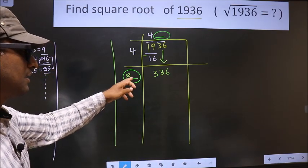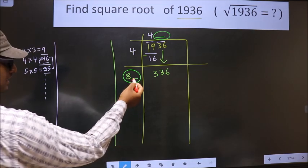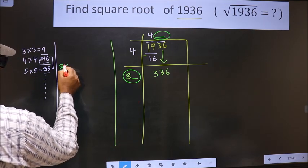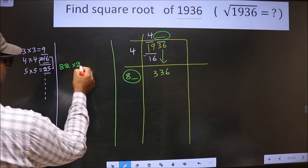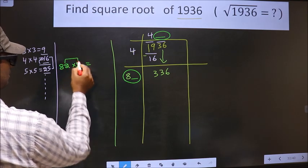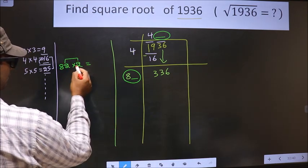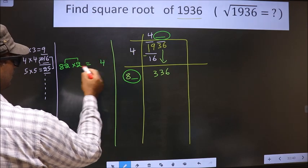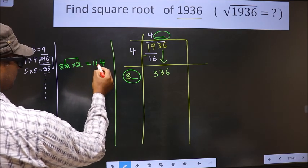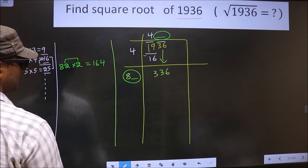If I take 2 here, then I should also multiply by 2. These two numbers should be same. So 2 into 2, 4, 2 into 8, 16. 164 is far from 336.